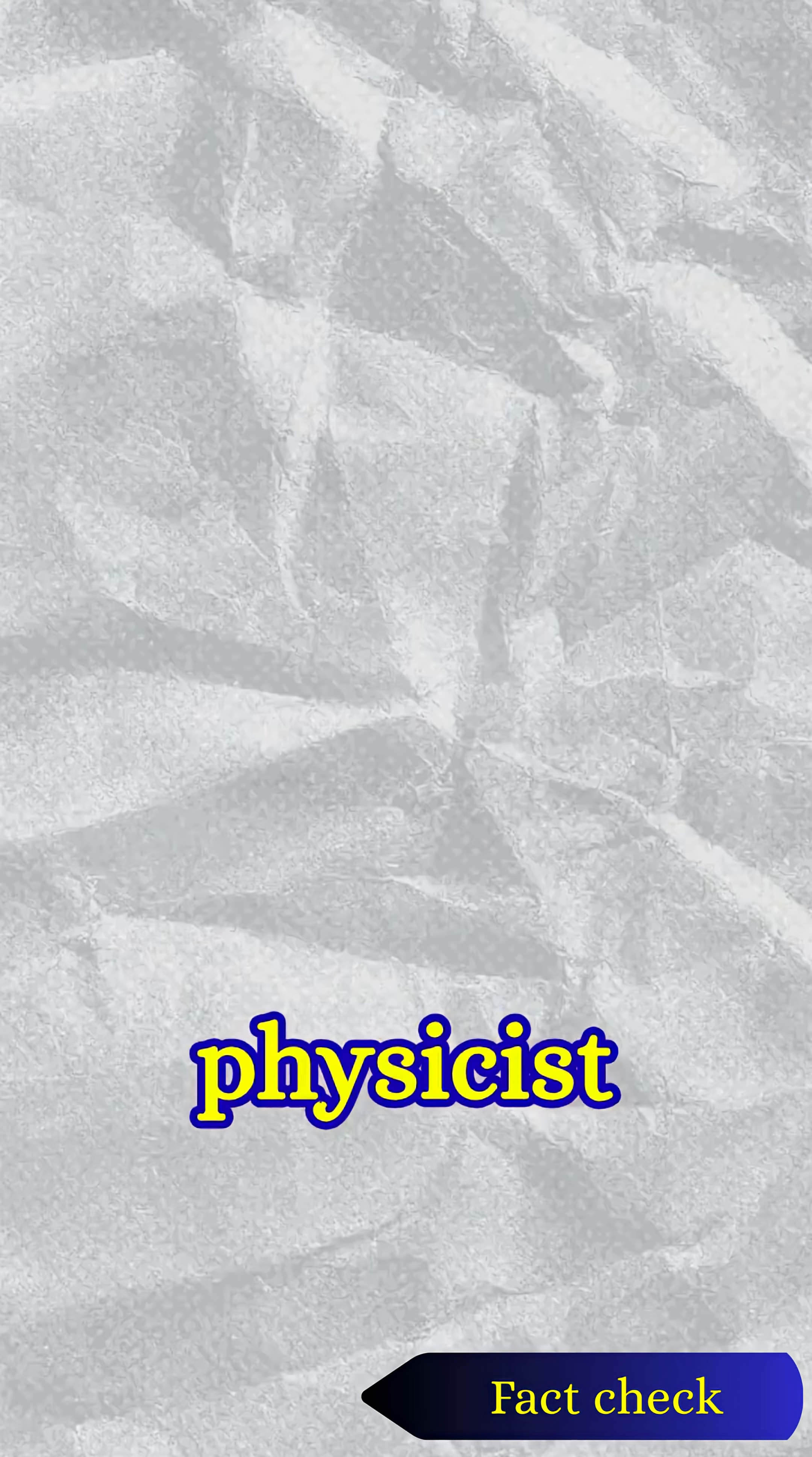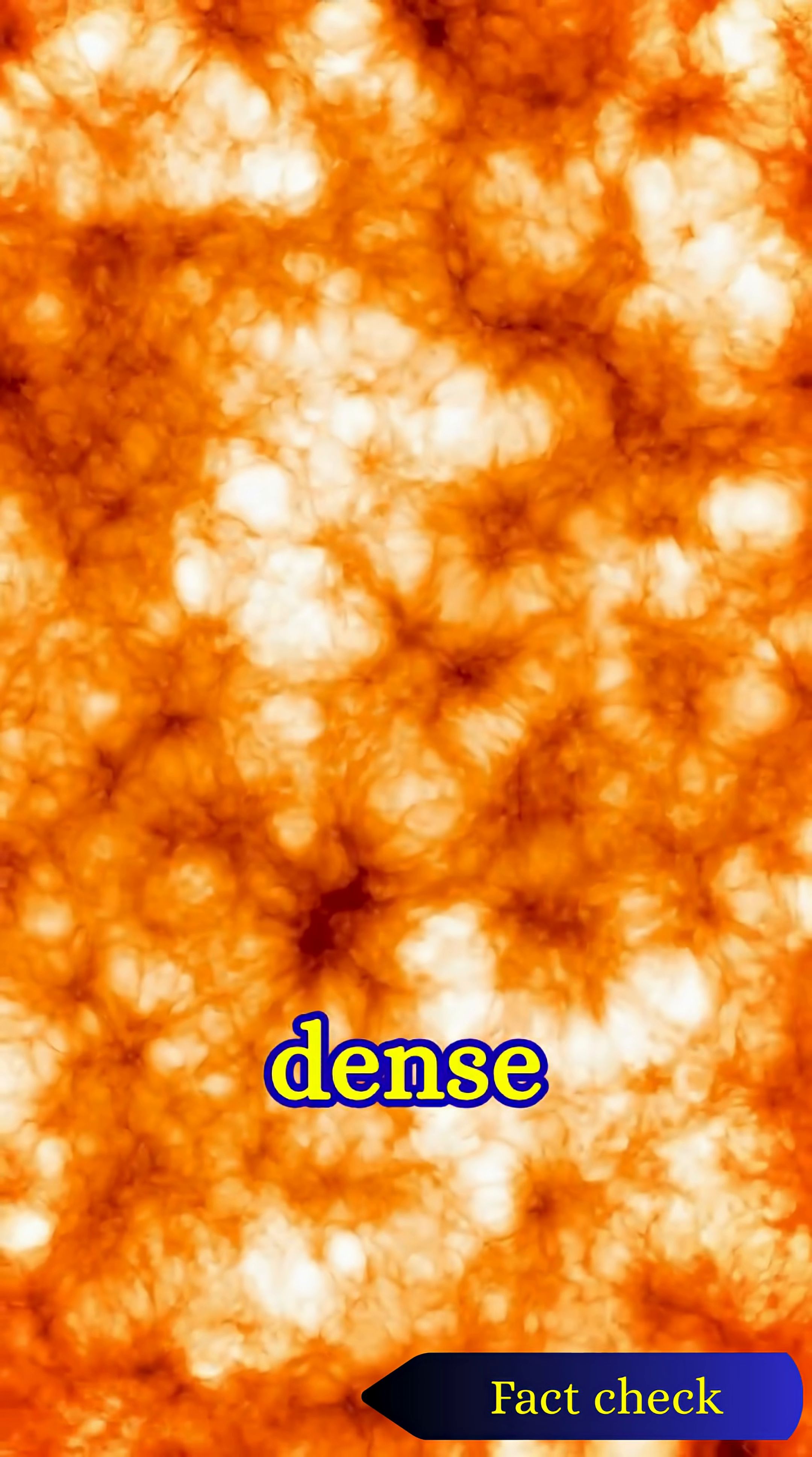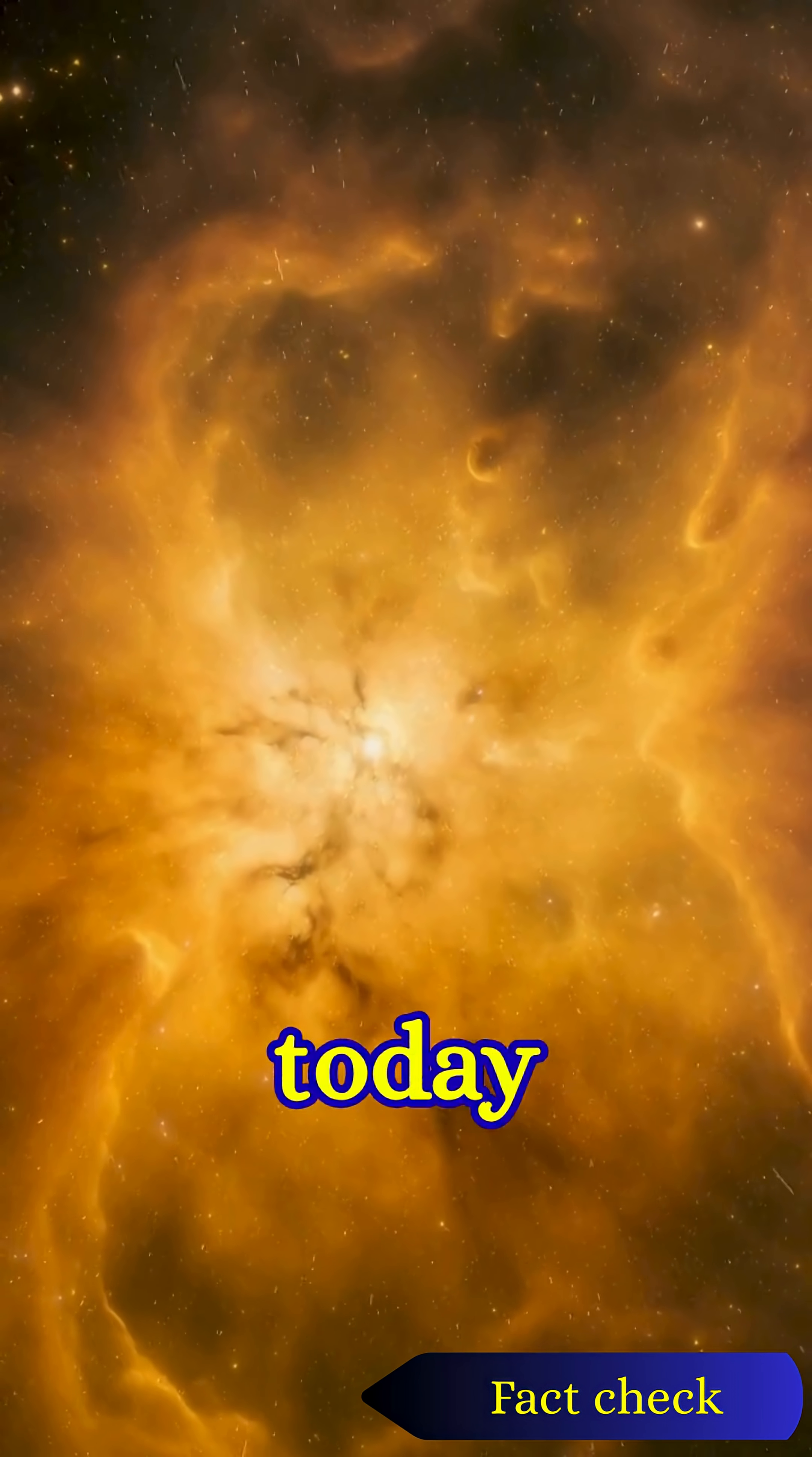In 1948, physicist George Gamow predicted that if the universe began hot and dense, it should have left behind a faint afterglow of radiation, which could still be detected today.